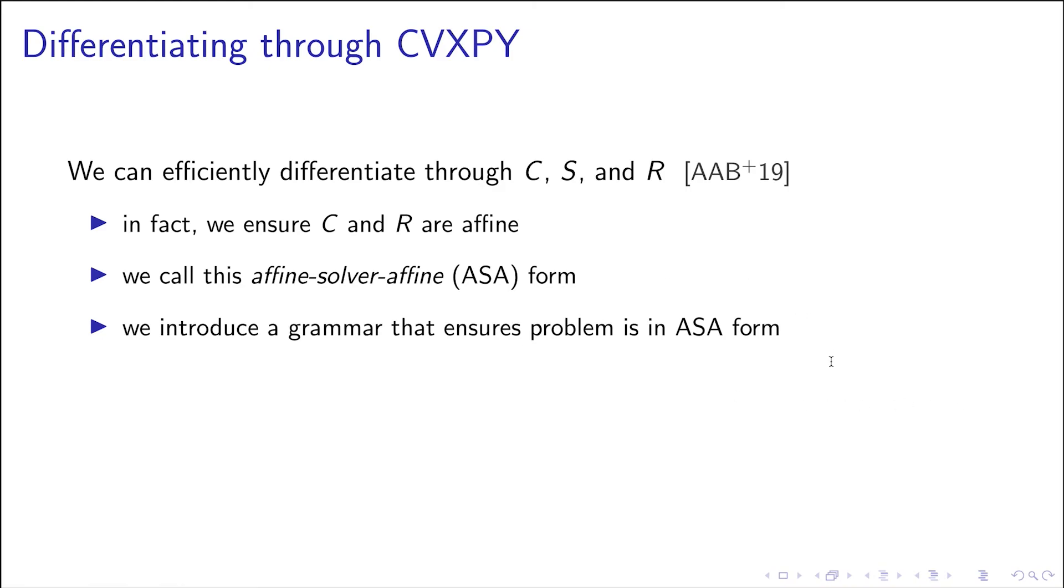We call this affine-solver-affine form, and we introduce a grammar, some additional rules in the construction of CVXPy problems, to ensure that we can obtain this structure. Because if you just write parameters in an arbitrary way, you're not guaranteed to have this structure—that the mapping from the original parameters to the problem standard form be affine. That's something we do with this grammar.